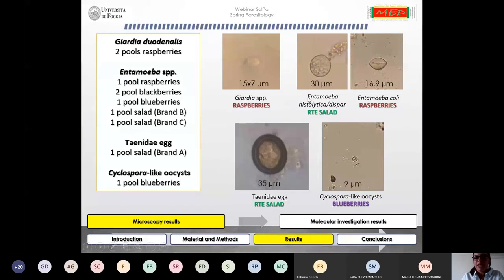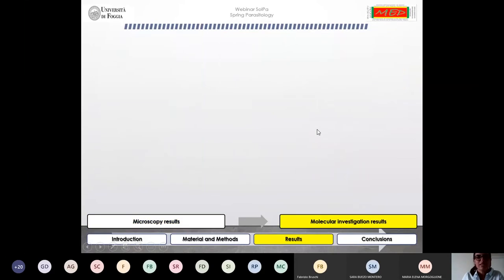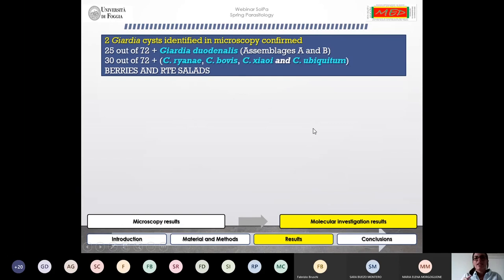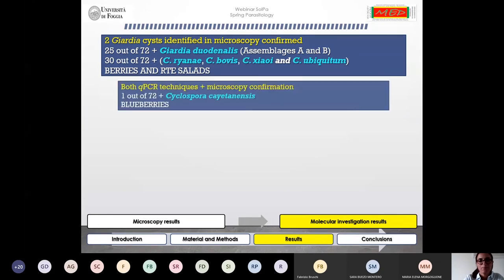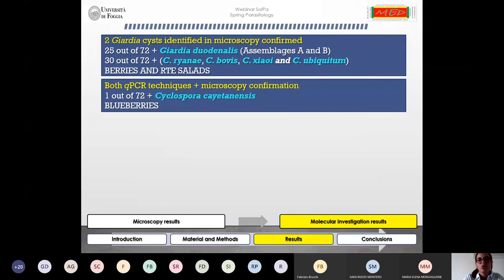Regarding the molecular investigation results, first of all we managed to confirm the two Giardia cysts that we had identified microscopically. Overall, we found 25 samples positive for Giardia duodenalis assemblages A and B, and 30 positive samples for Cryptosporidium belonging to four different species: ryanae, bovis, xiaoi, and ubiquitum. These parasites were detected in both berries and ready-to-eat salads. In addition, one blueberry sample was found positive for Cyclospora cayetanensis using both real-time PCR techniques, confirming what we had found in microscopy.